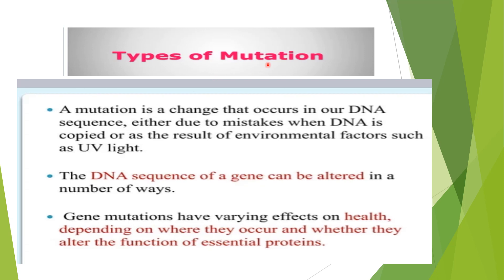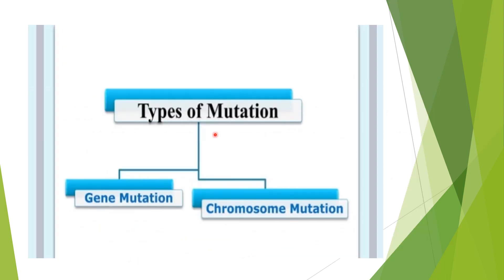Before going to the types of mutation, let's look at a bit more about mutation. A mutation is any change that occurs in our DNA sequence, either due to mistakes when DNA is copied or as a result of environmental factors like UV light. The DNA sequence of a gene can be altered in a number of ways. Gene mutations have varying effects on health depending on where they occur and whether they alter the function of essential proteins. There are two types of mutations: gene mutation and chromosome mutation.